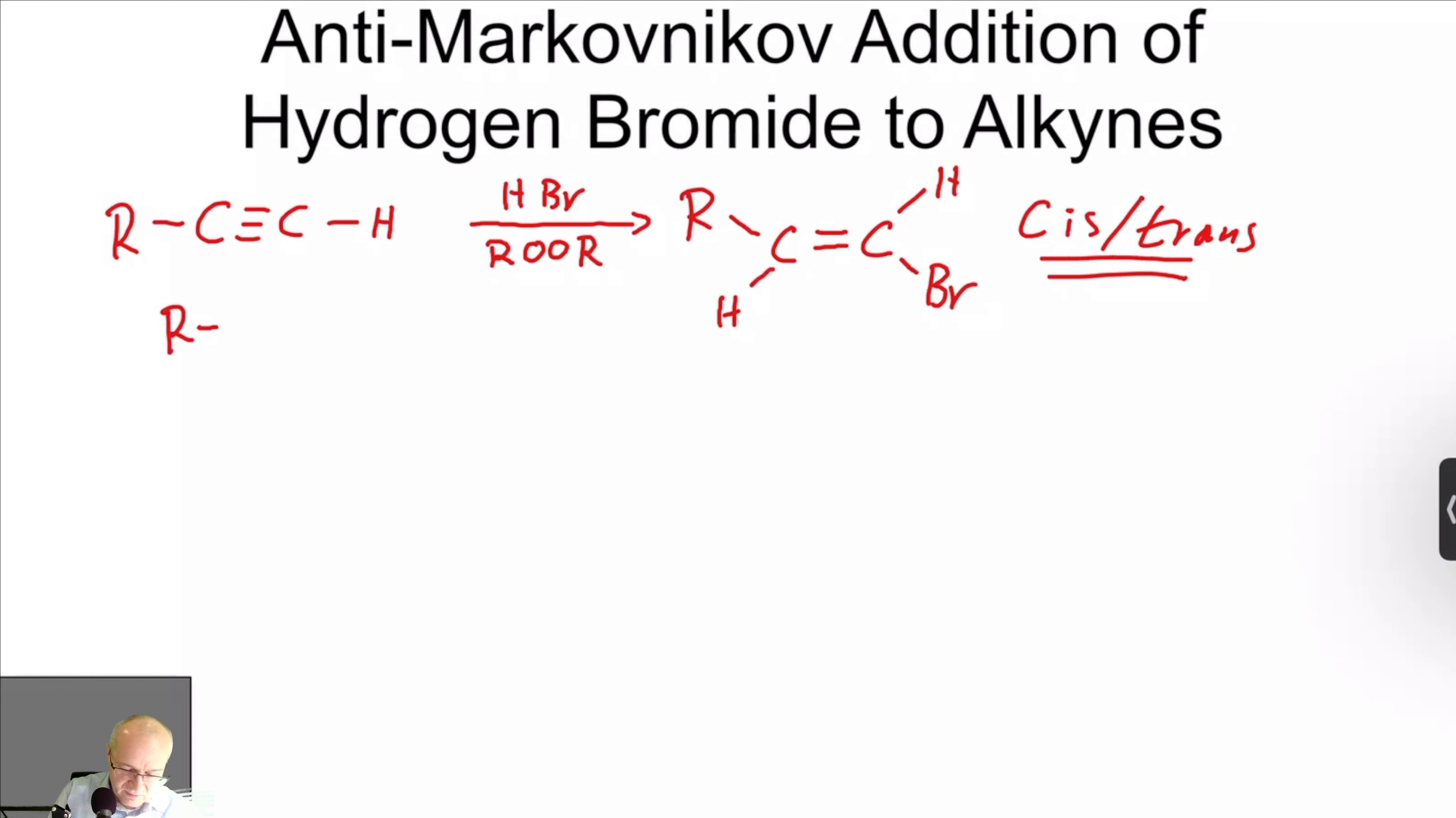So let's take a quick look at this mechanism. So the peroxide will do a homolytic cleavage, nothing new here. HBr will then react with the oxygen free radical using fishhook arrows because it's one electron movement at a time. There, we'll start here. Sorry, it gives you the bromine radical, not the anion. There we go.